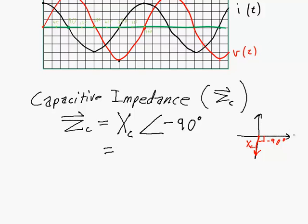In rectangular coordinates, what we're actually dealing with here are complex numbers. There are lots of video resources you can look into for a refresher on imaginary numbers. Just remember that this is a two-dimensional vector that we can express in polar or rectangular coordinates. It has zero in the x direction and Xc in the imaginary direction. So this is written as 0 minus jXc, where j designates the imaginary axis. In electronics we use j instead of i so we don't get confused with the commonly used i for current.